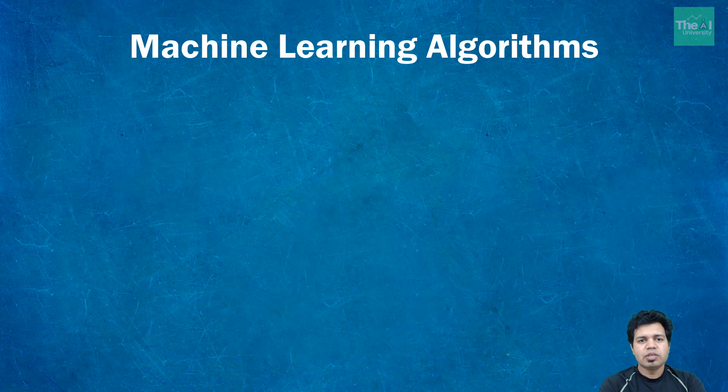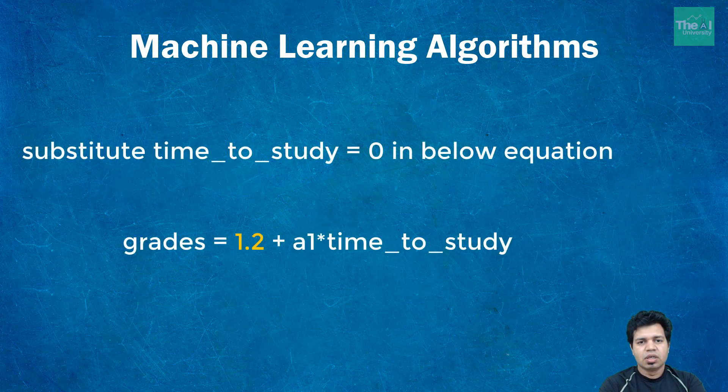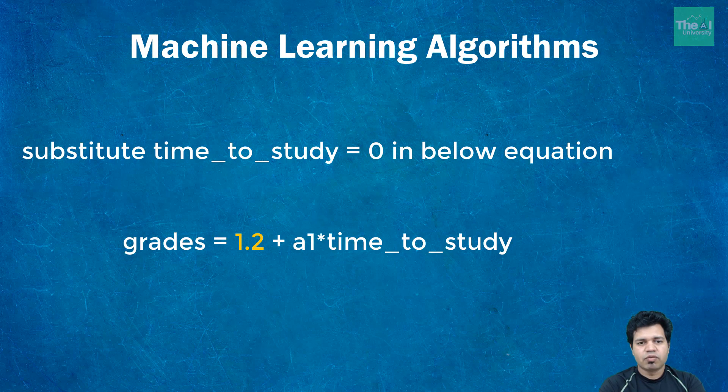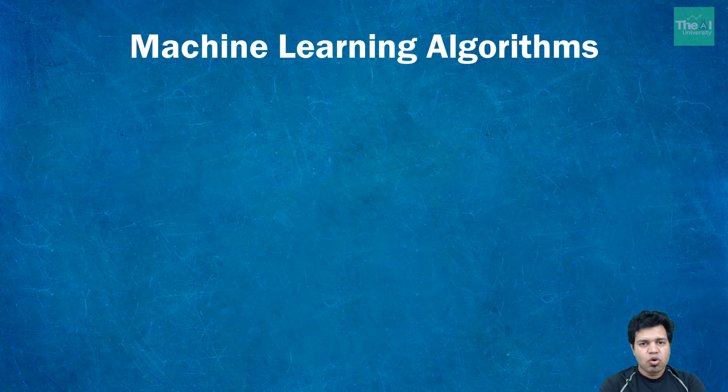What this essentially means is if a student puts zero number of hours time to study or doesn't study at all, then he will definitely get the grade of 1.2. So a1 is a slope here.